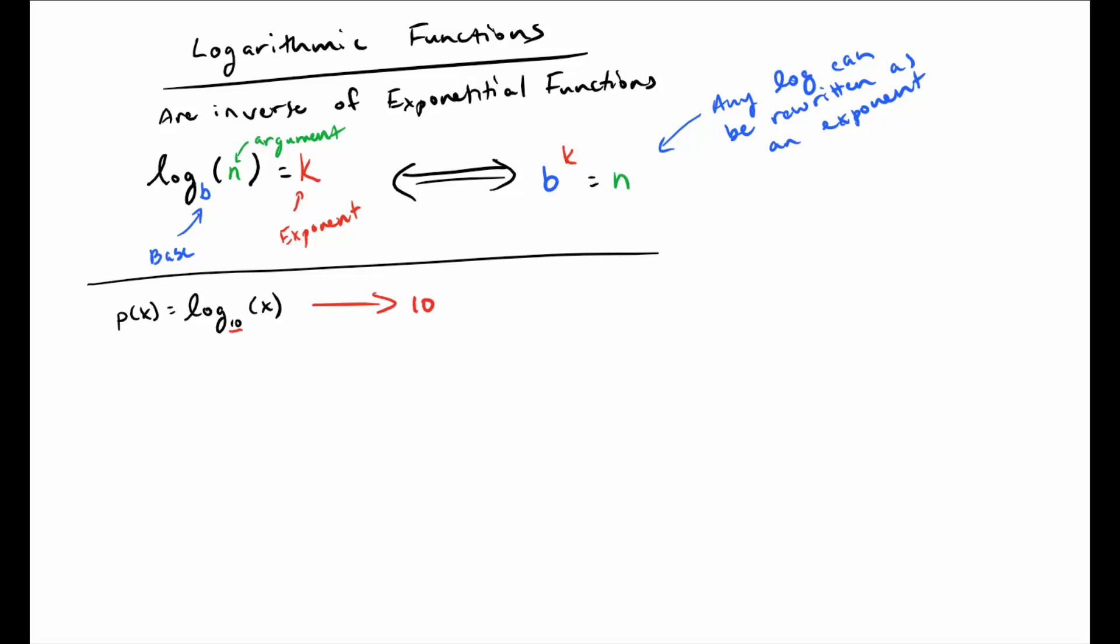We'll go ahead and rewrite this as an exponent. So we have a base of 10, it's kind of the common log. It's being raised to the p of x power, and then that is equal to the argument x. I'm doing this for a base of 10, but this would work for any of them. Again, it's just easier to work with a base that we know.